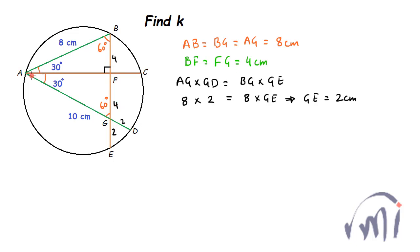And again, I can use intersecting chords theorem in chords AC and chord BE. So here AC and BE are intersecting each other at point F, so AF multiplied by FC will be equal to BF multiplied by FE.